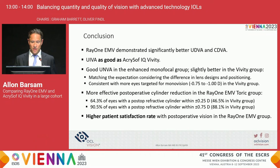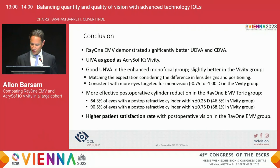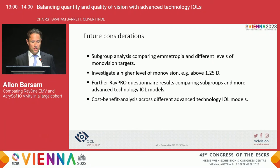In conclusion, the Ray-1 EMV demonstrated significantly better uncorrected and corrected distance vision. Intermediate vision was equally good between the two lenses. We saw good uncorrected near vision in the EMV group, but slightly better — three letters — in the Vivity group. Expectations were matched or even surpassed in the EMV group. That difference in reading vision may be explicable by the fact that we targeted a little bit more monovision in the Vivity group. We saw more effective post-operative cylinder reduction in the EMV toric group and higher patient satisfaction levels in the EMV group.